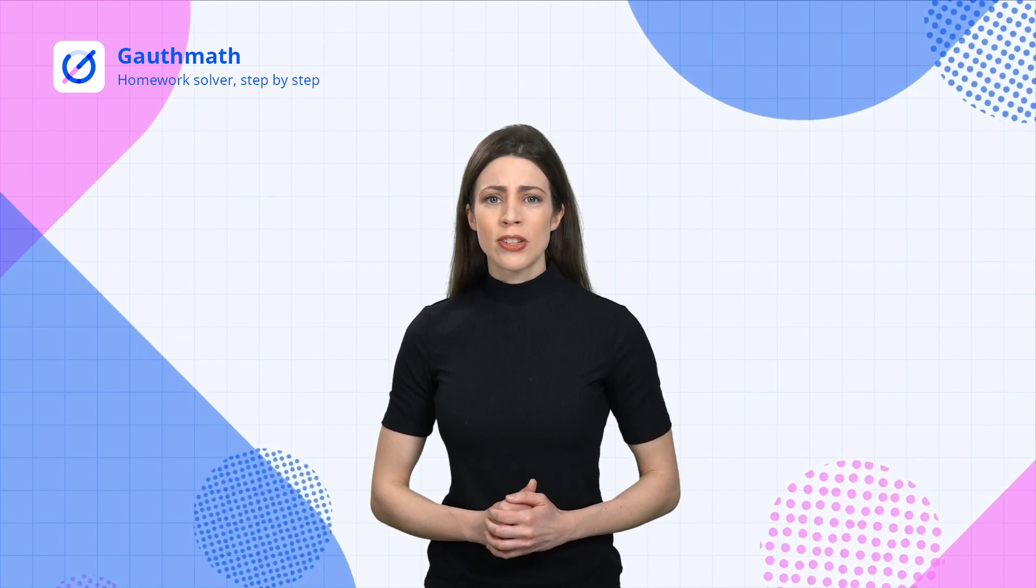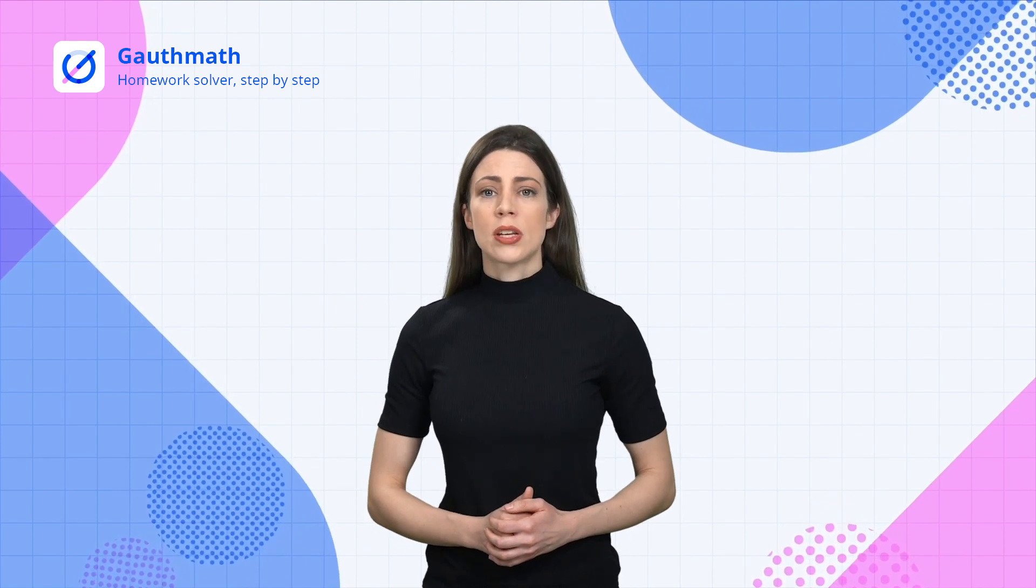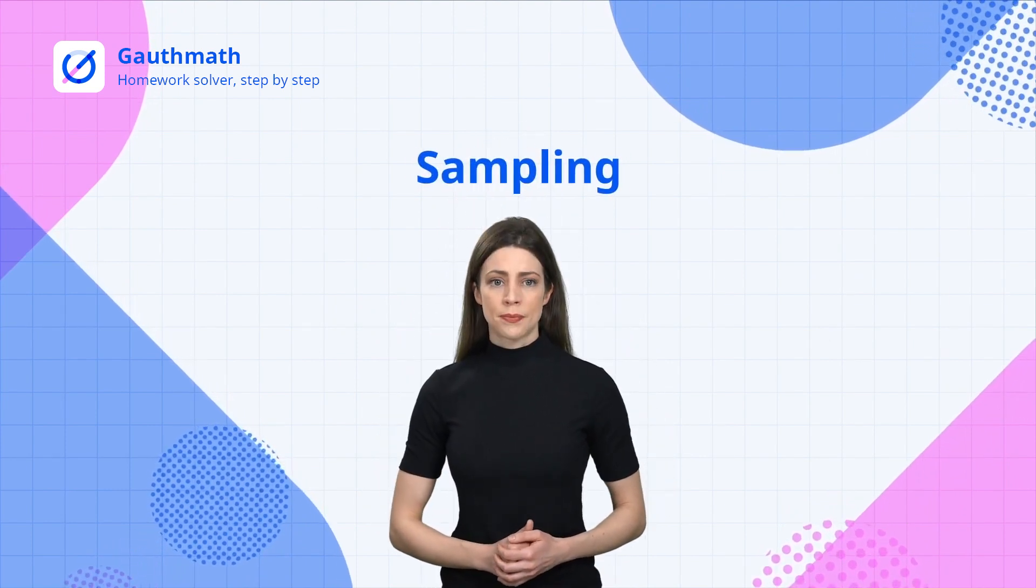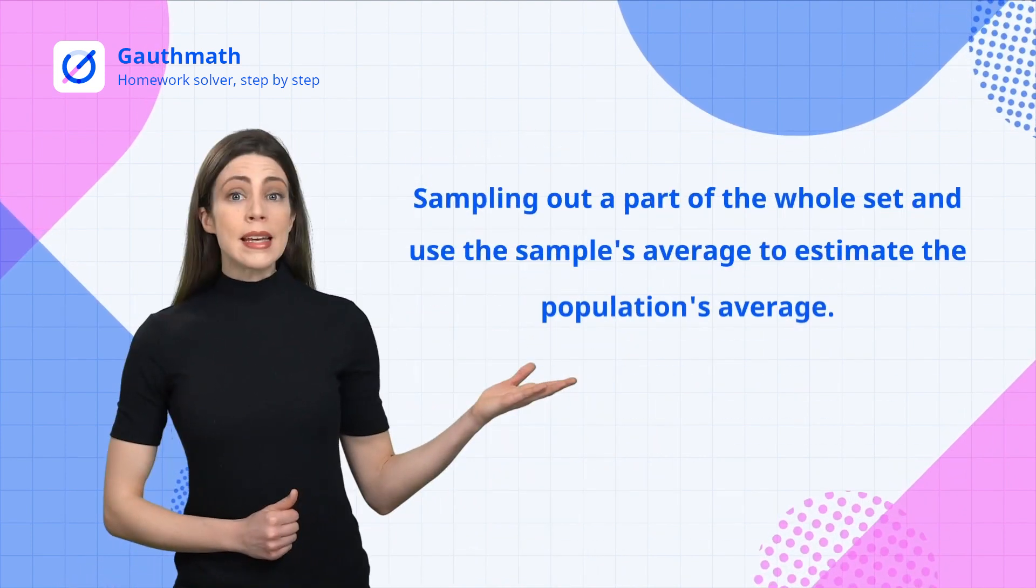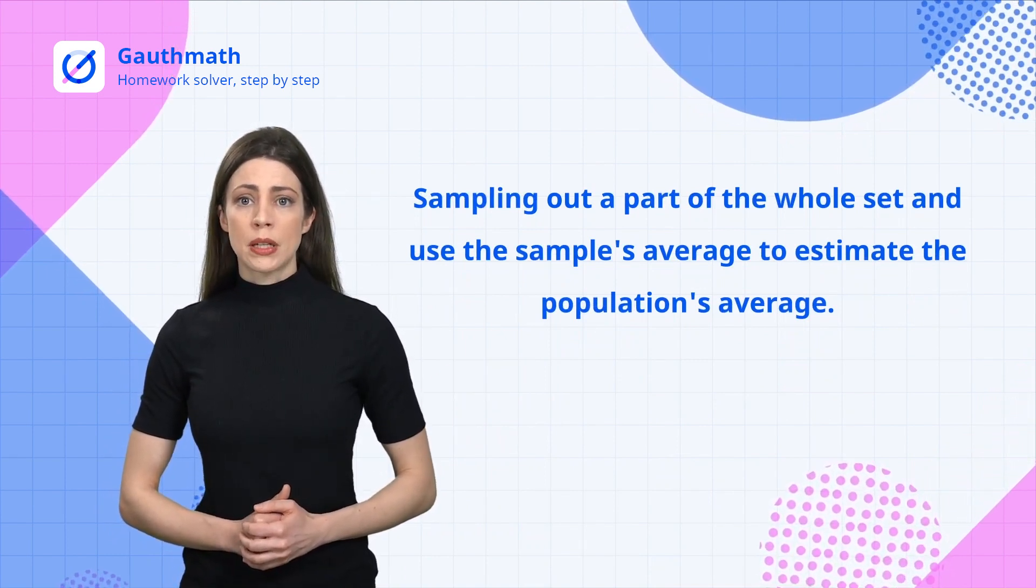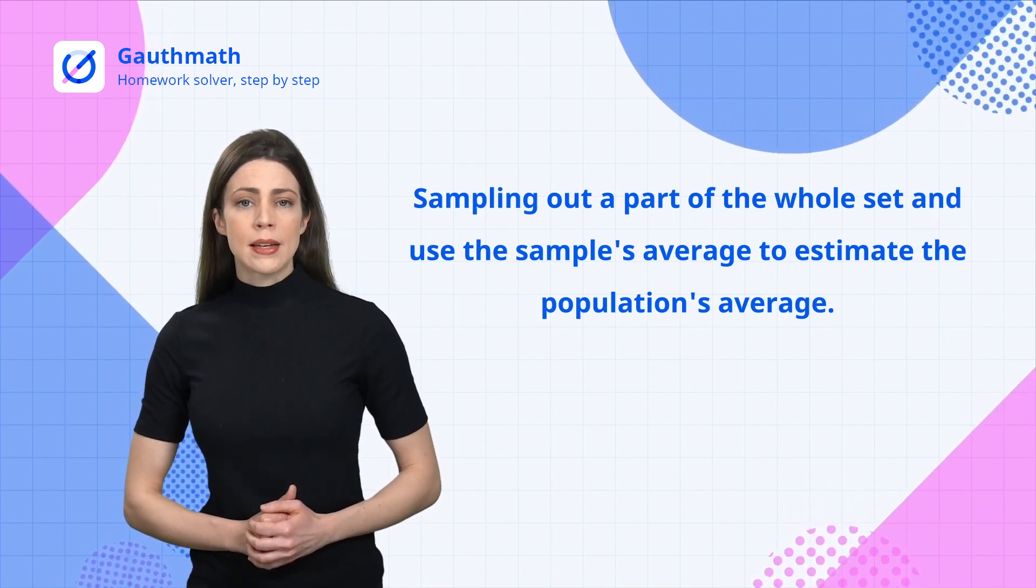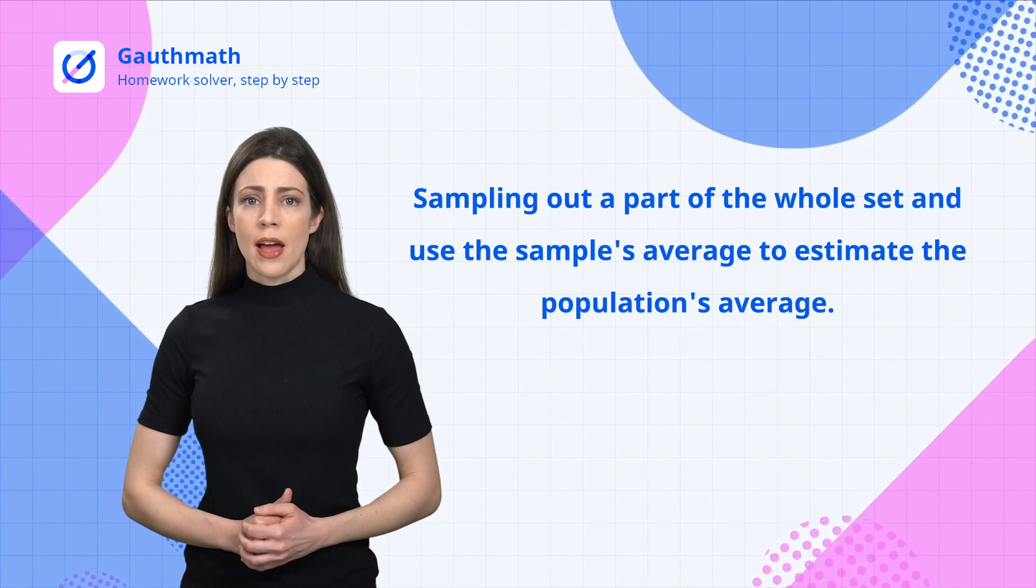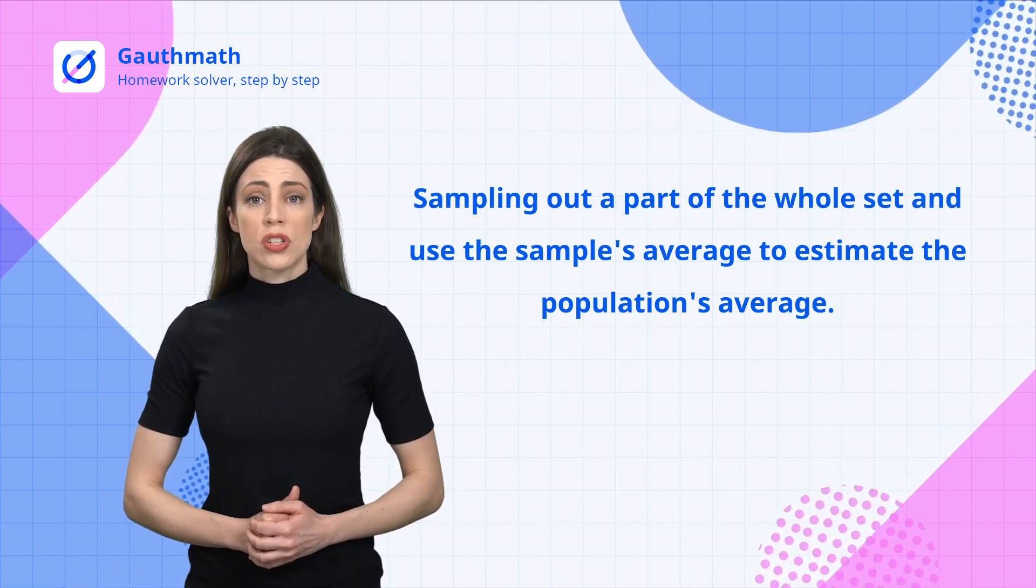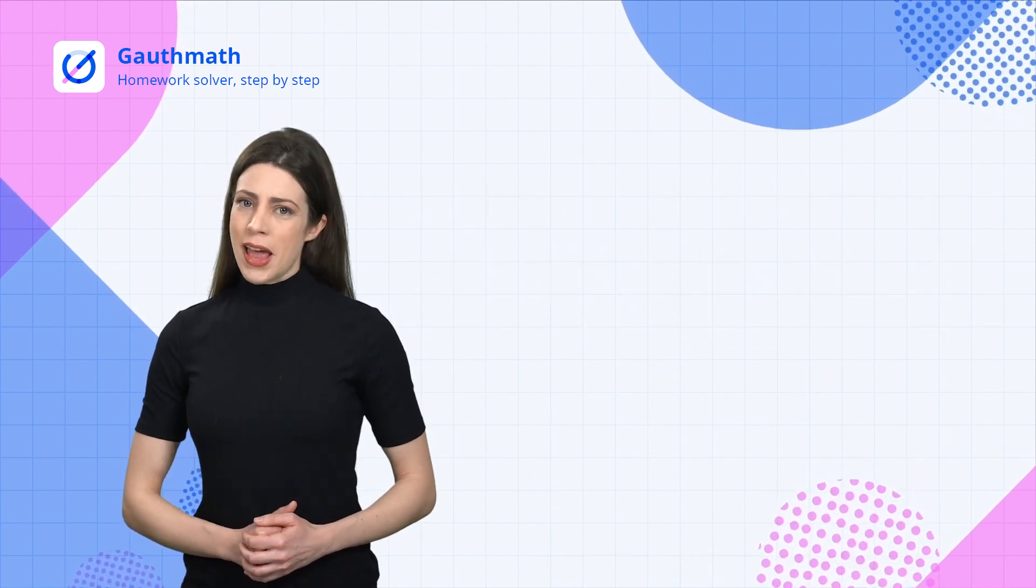Is there no way for us to get the average in these cases? Can we help mom to get a good lunch budget? In addition to census, we have another investigation method called sampling. Sampling needs us only to take out a part of the population as a sample and use the average value of the sample, which is called the sample mean, to estimate the average value of the whole set, which is called the population mean.